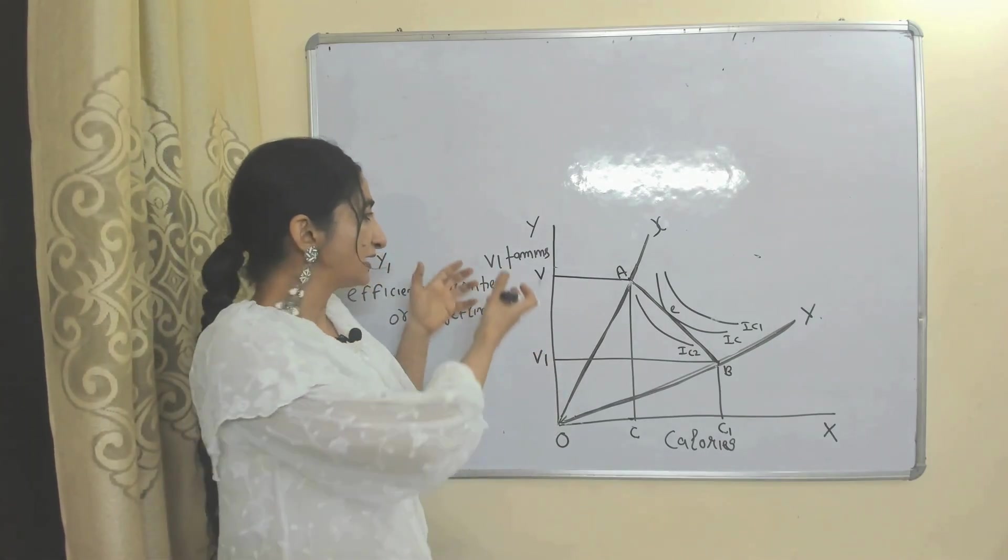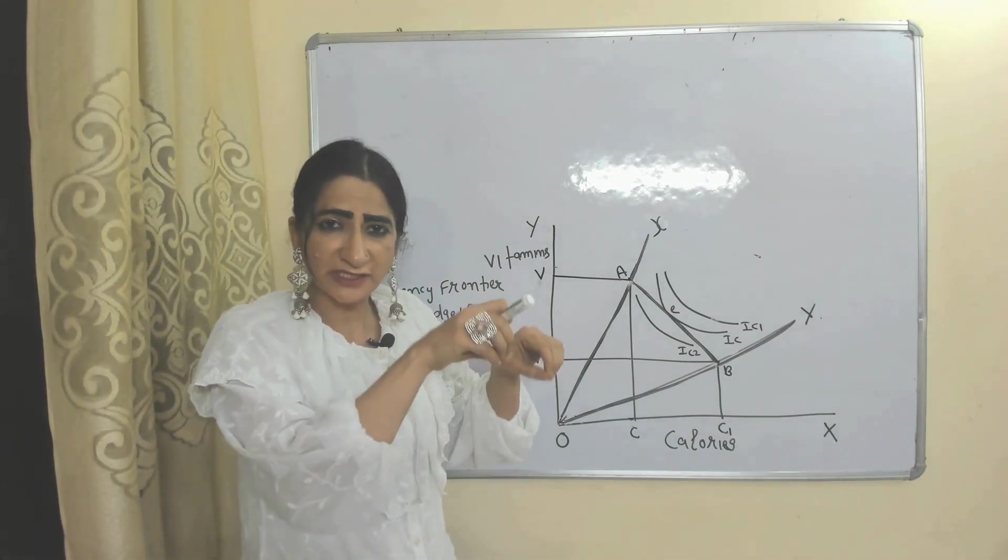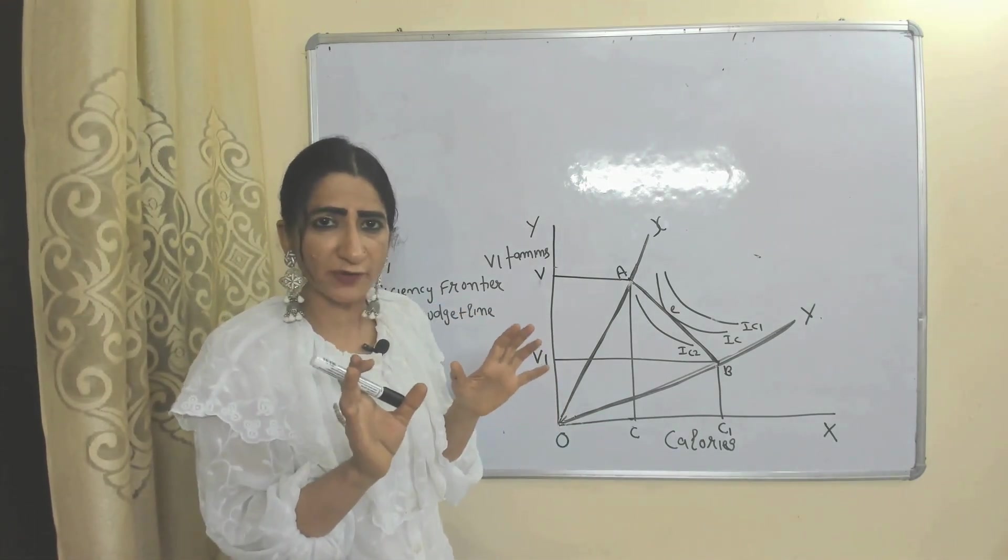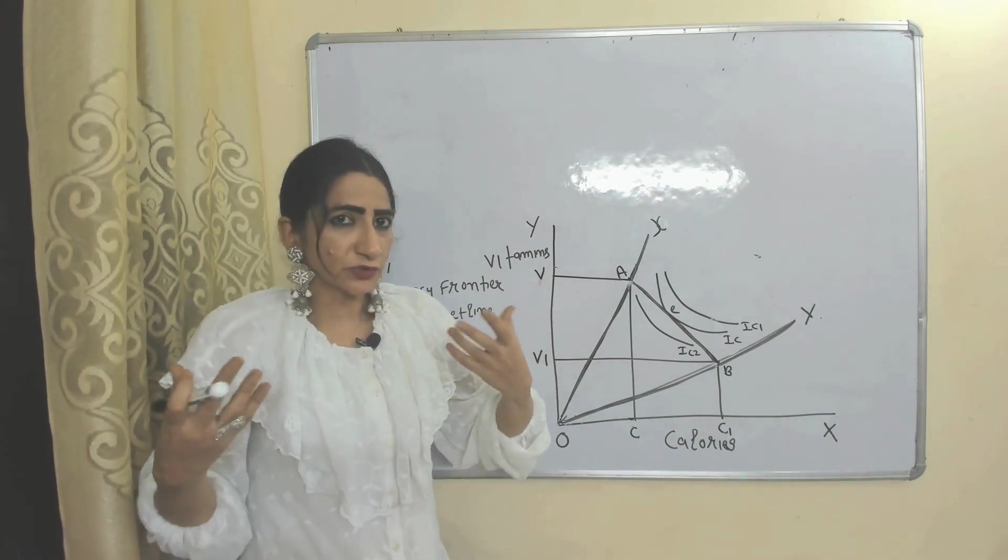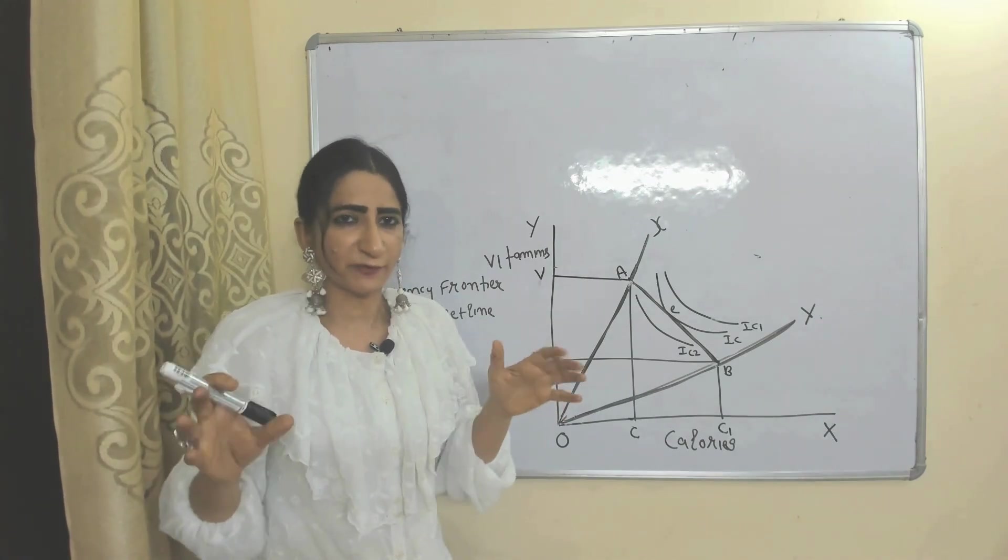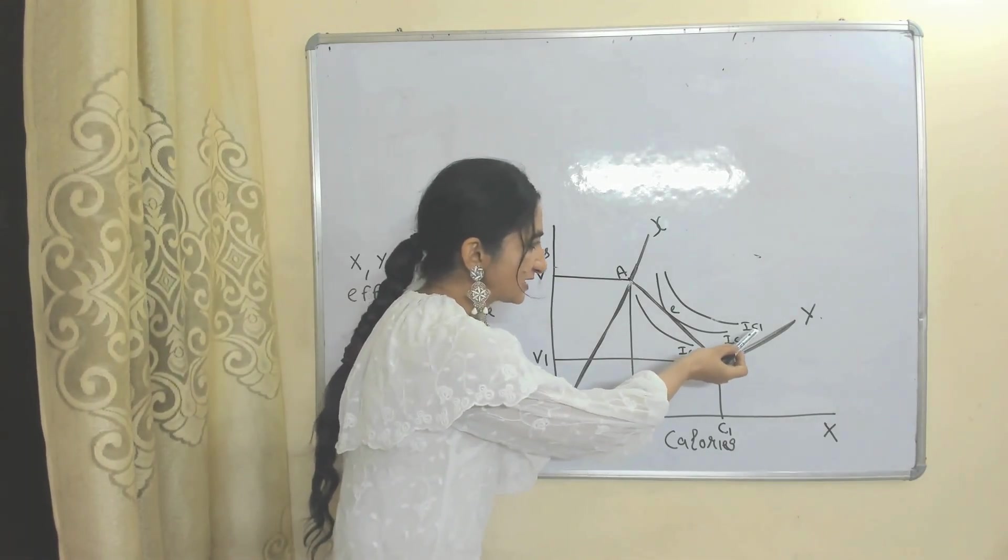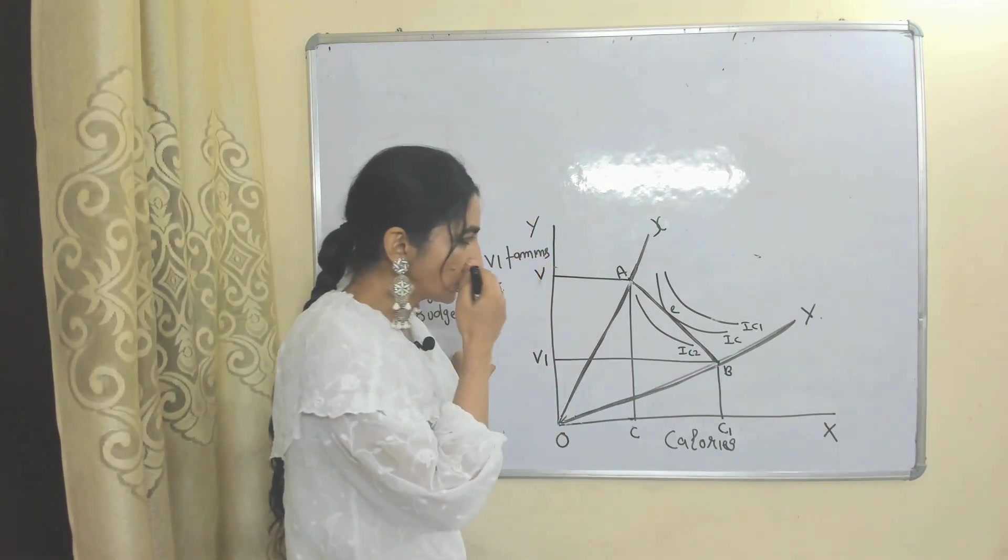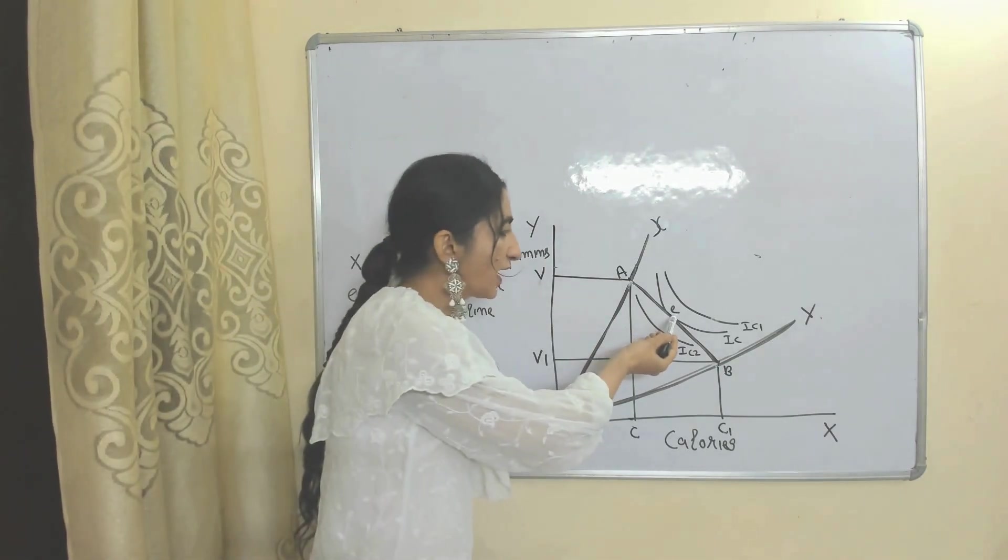But where is utility? As we know, to show utility we use indifference curves. Here we have three ICs: IC, IC1, and IC2. Point E is the maximum satisfaction point, meaning at this E point the consumer is receiving maximum utility. So E is the consumer equilibrium point.